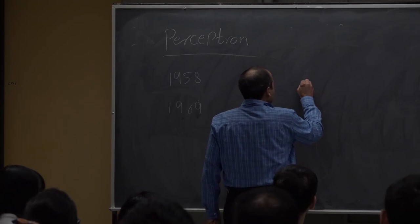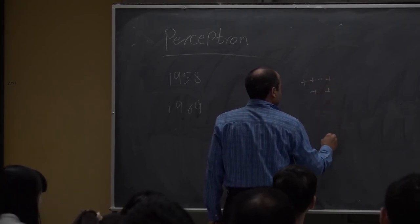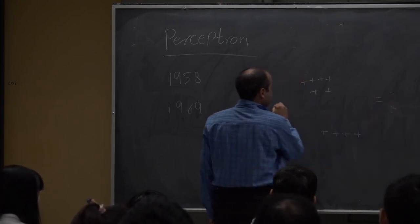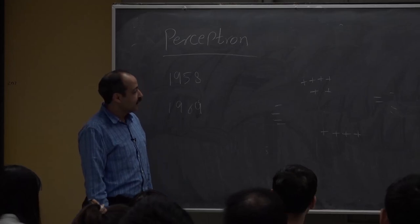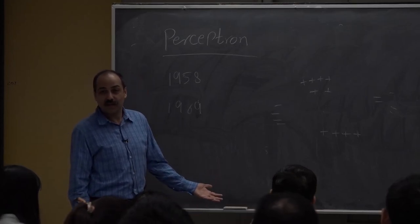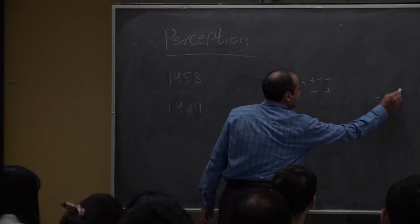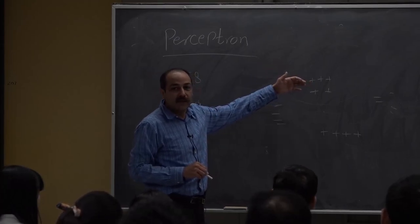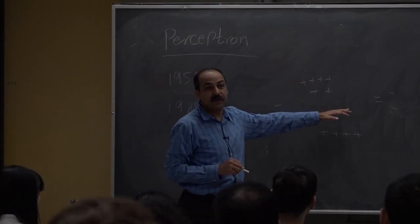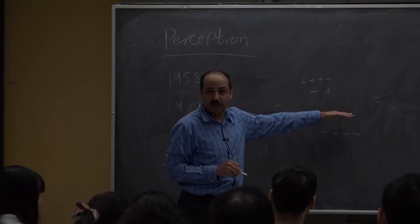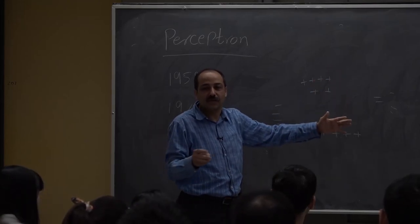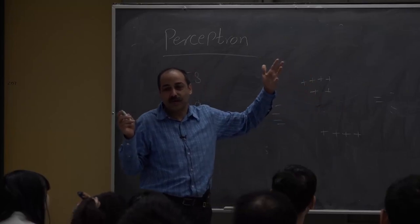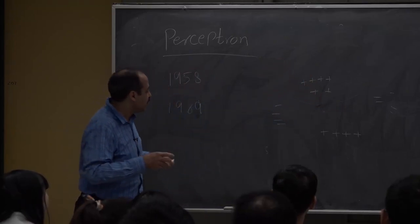Minsky's book showed it's impossible for the Perceptron to solve the XOR problem — where you have one class here and a negative class there, and you can't classify this with a linear classifier. By a nonlinear classifier you could, but not a linear one. So in their book they showed that Perceptron cannot solve this problem, which was quite unexpected for many researchers.